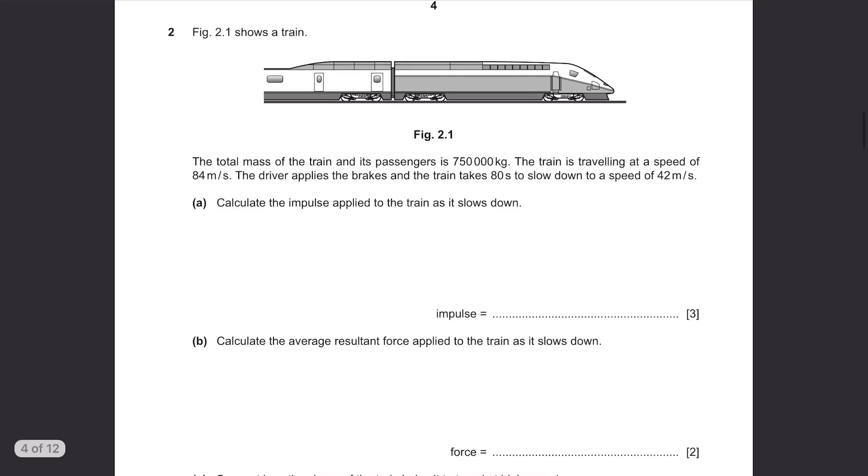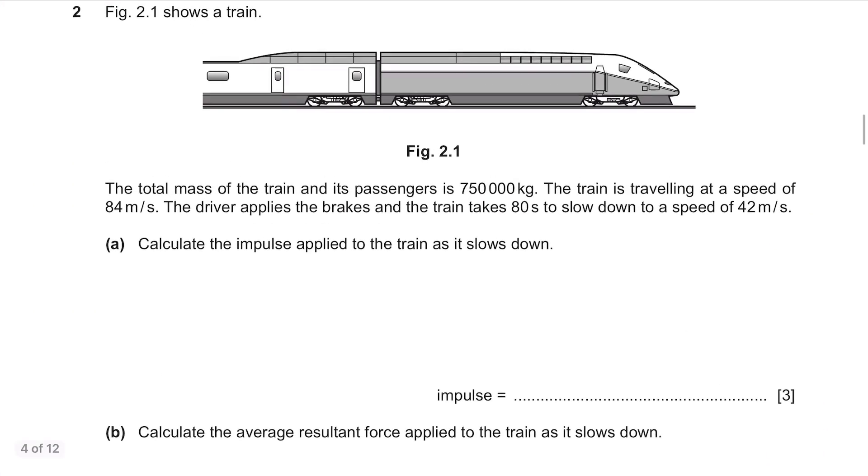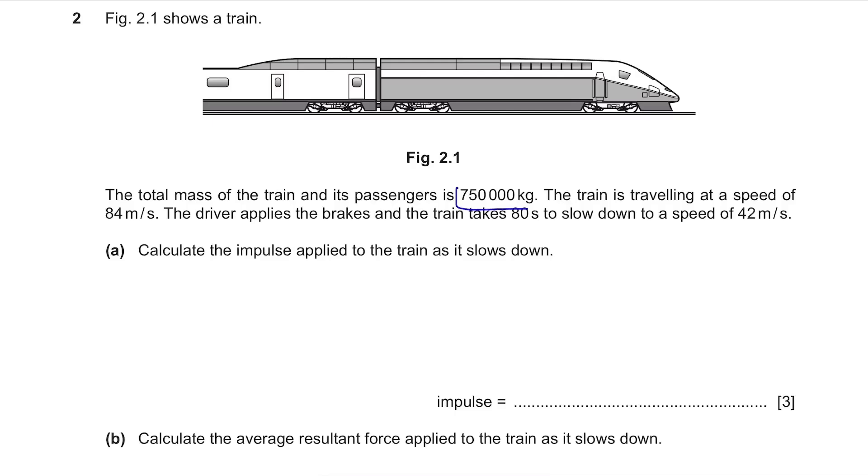Question 2. Figure 2.1 shows a train. The total mass of the train and its passengers is 750,000 kg. The train is travelling at a speed of 84 m per second. The driver applies the brakes and the train takes 80 seconds to slow down to a speed of 42 m per second.